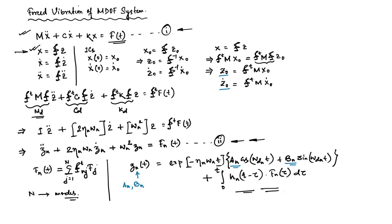The modal transformation x = φz helps us decouple the system equations, giving N uncoupled equations that we solve using the Duhamel integral. I suggest you include the remaining part — the transient response — in the code and prepare it for any MDOF system. With that, let us conclude our discussion on the response of MDOF systems in the time domain. In our next class we will talk about the response of the same system in the frequency domain, where the solution is much more compact using Fourier domain analysis.